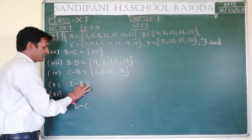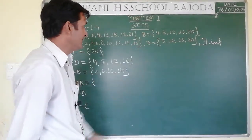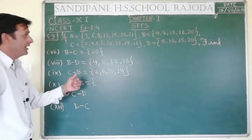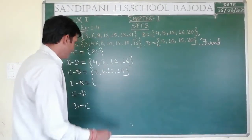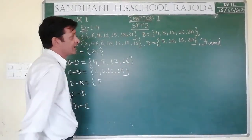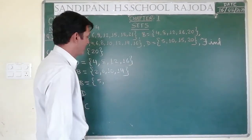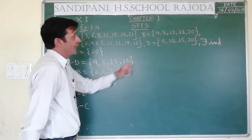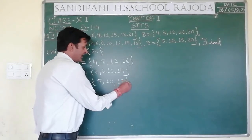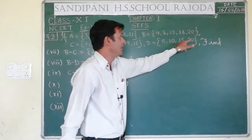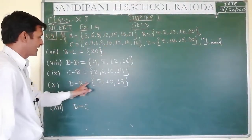Now D minus B: we write all elements of D which are not present in B. 5 is not in B — write. 10 is not in B — write. 15 is not in B — write. 20 is in B — cannot write. So D minus B = {5, 10, 15}.